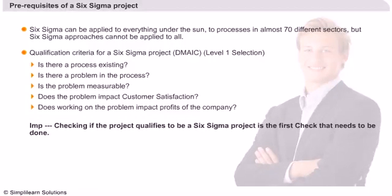Remember, this is the Level 1 check — the first check you do to know if a project qualifies as a Six Sigma project. It also asks whether working on the problem impacts the profits of the company.